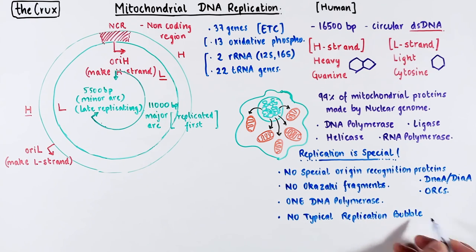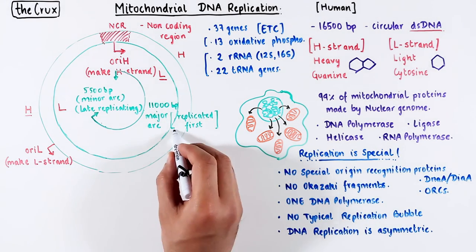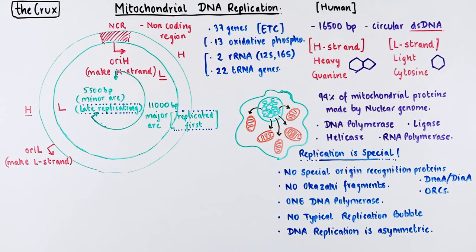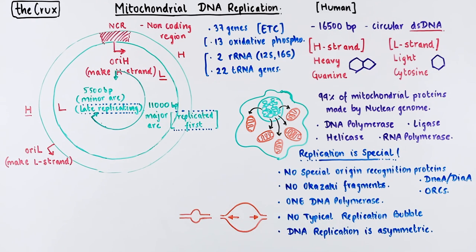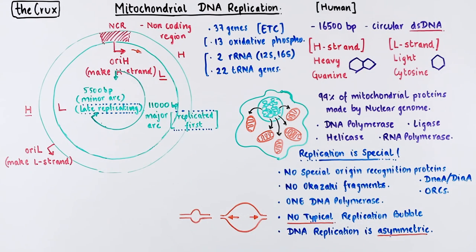The replication bubble is kind of weird in that it moves asymmetrically. This comes from the fact that part of the DNA replicates first and the other part a bit later. Normally we think of a bubble at the origin expanding in both directions. In this asymmetric and atypical bubble, replication starts and continues only in one direction.